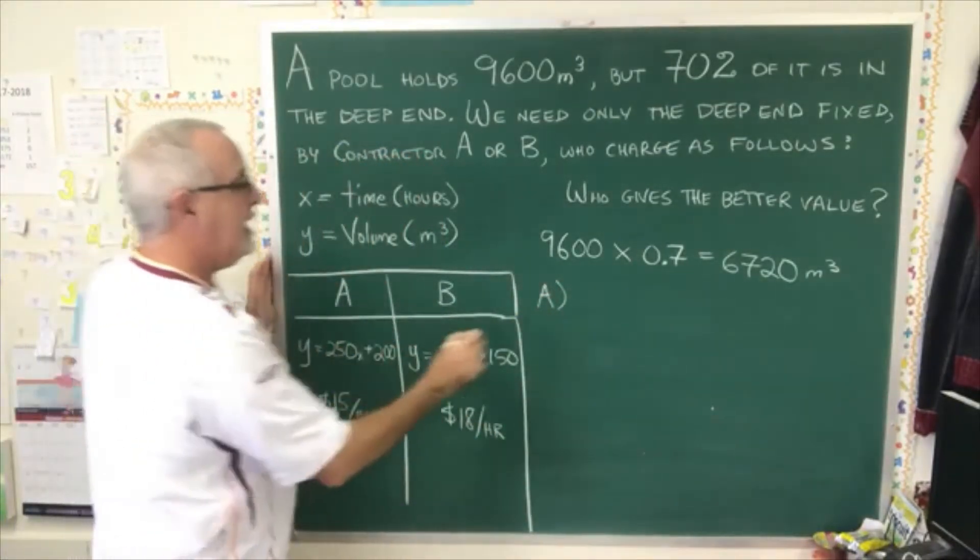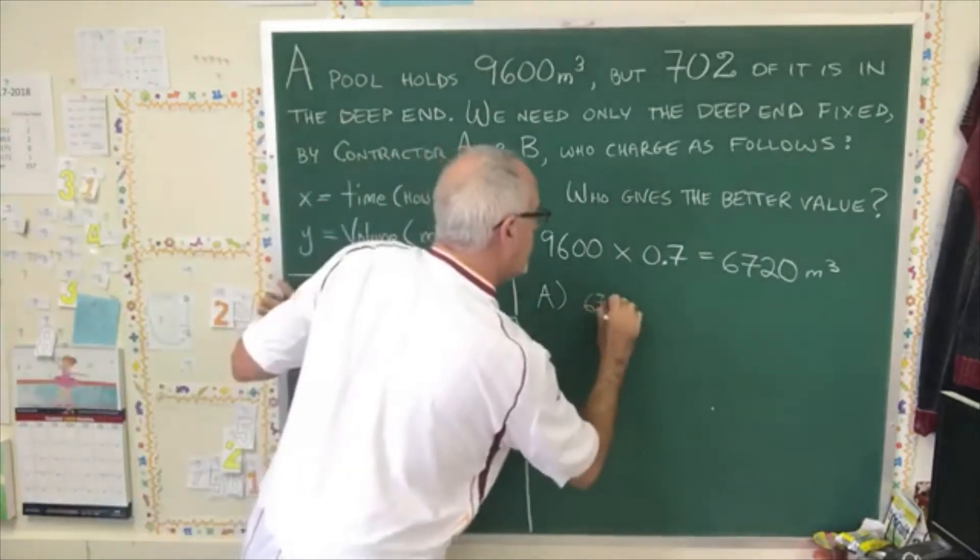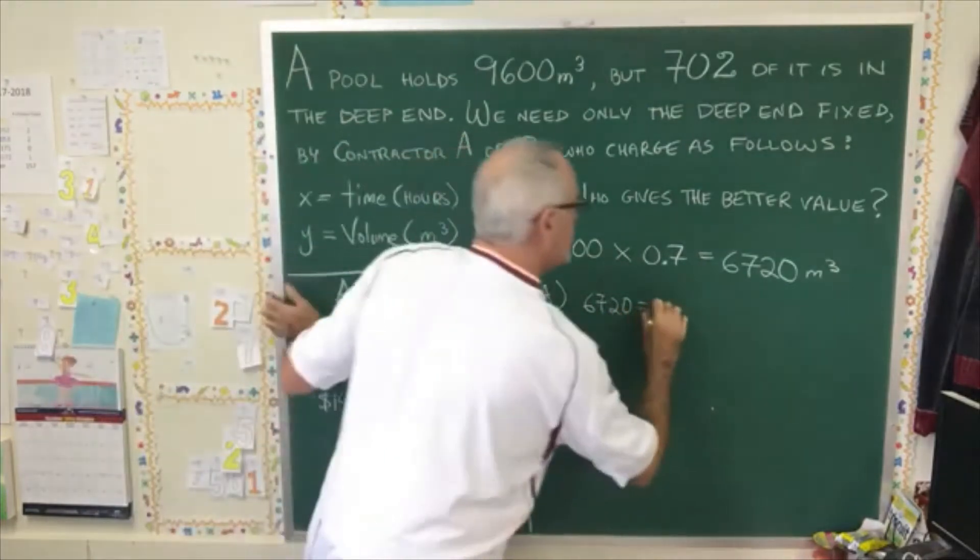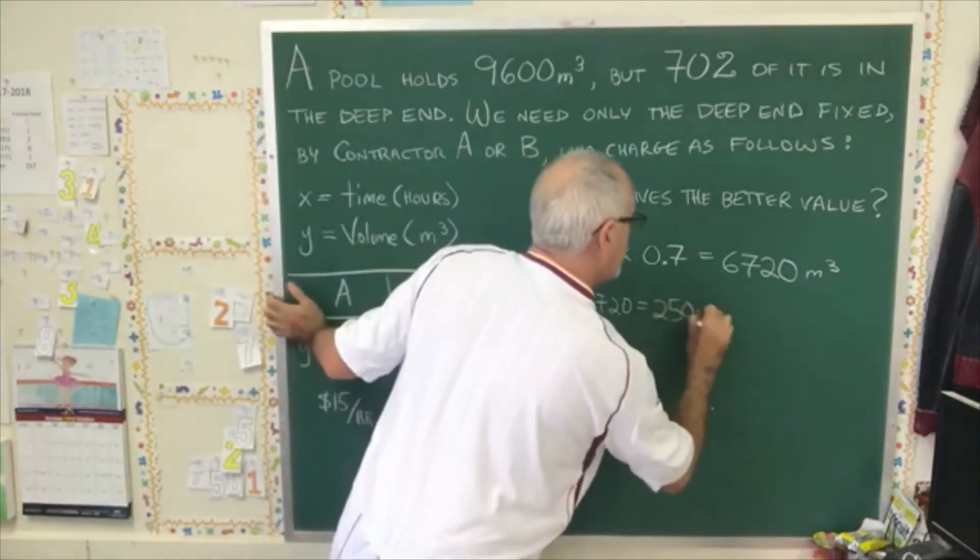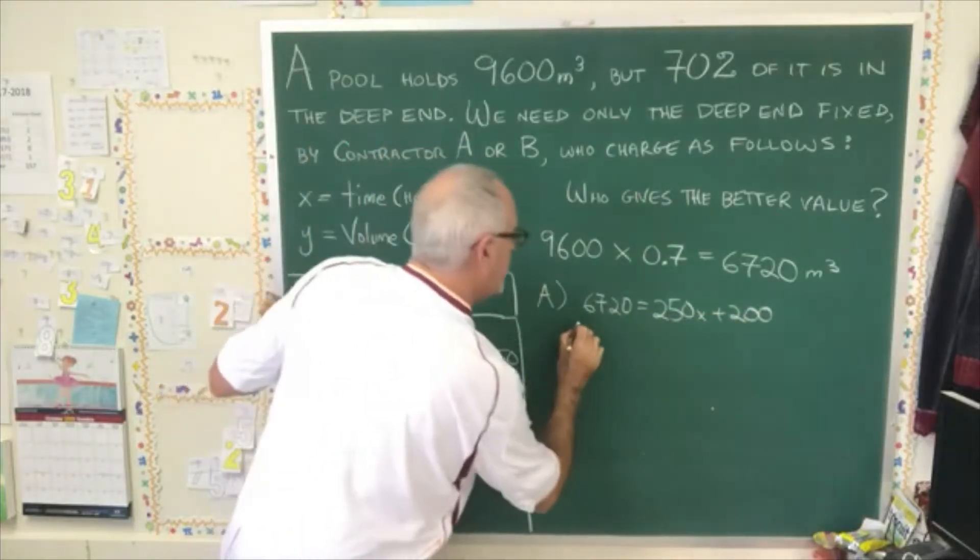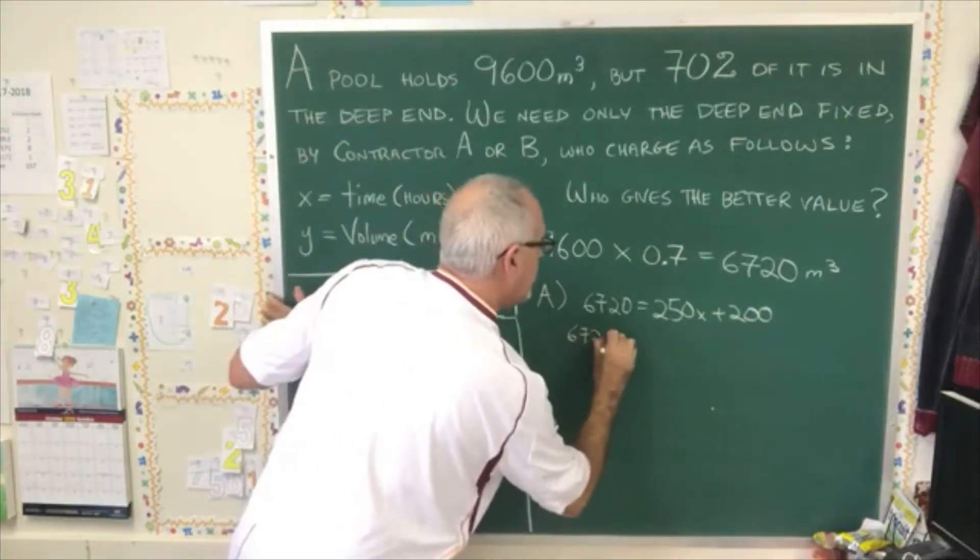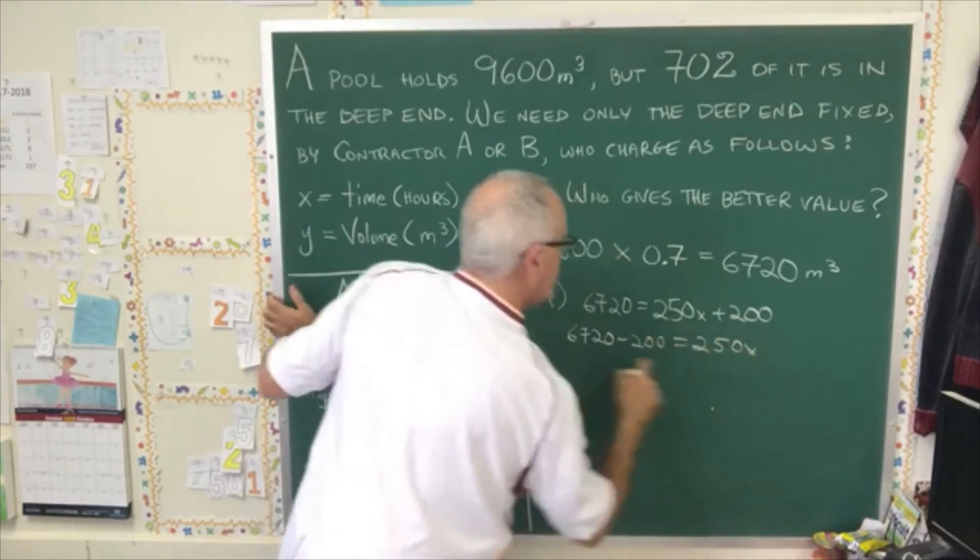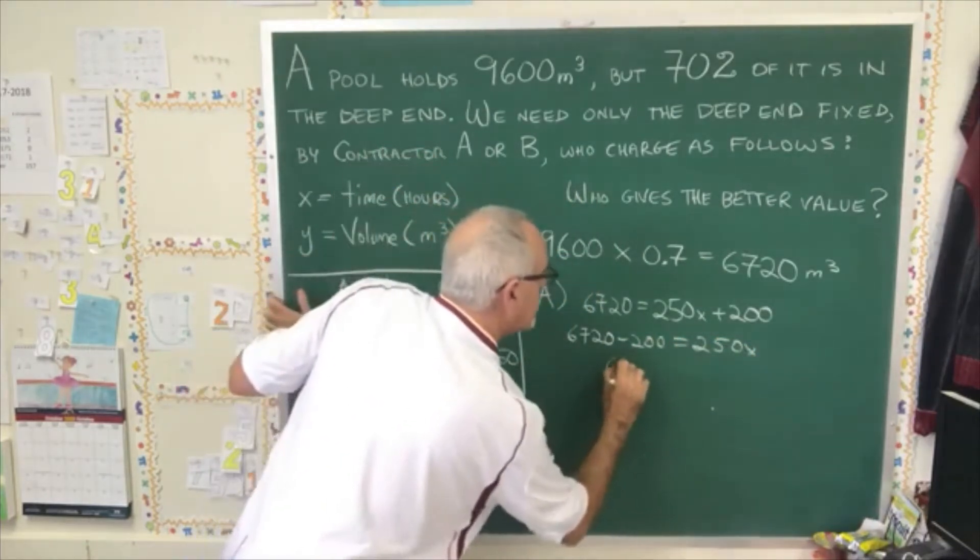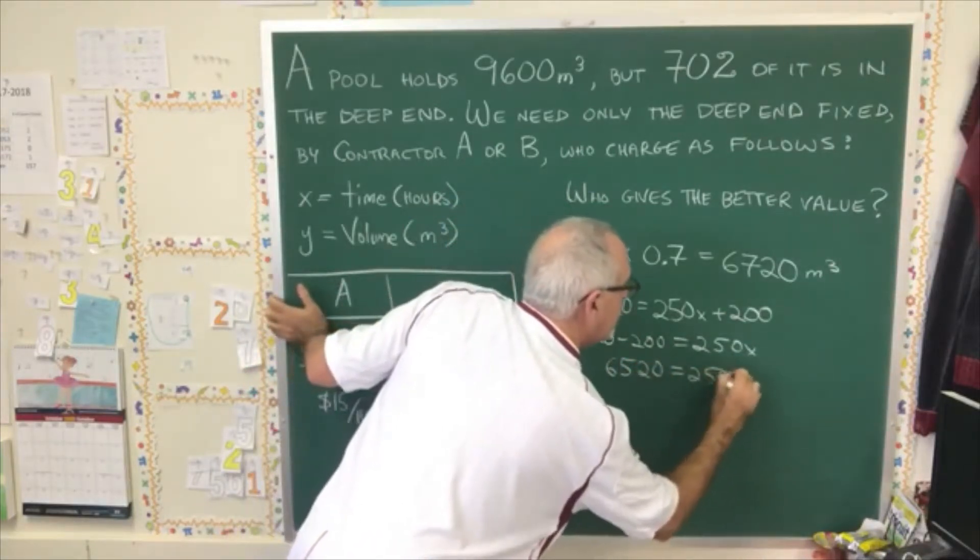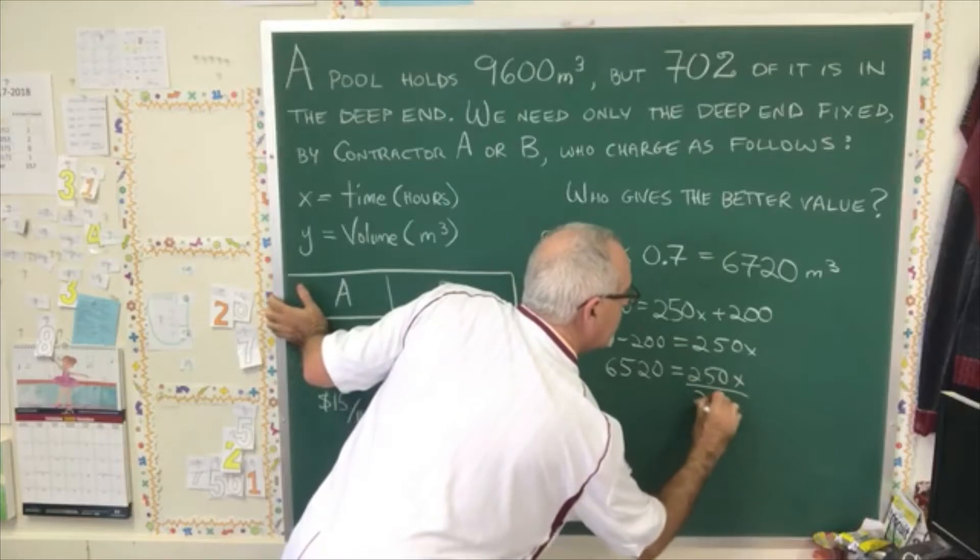First, we have 6720 equals 250x plus 200. We'll move the 200 to the other side, 6720 minus 200 equals 250x. This gives us 6520 equals 250x, and we divide both sides by 250.